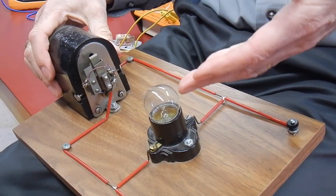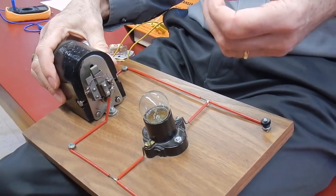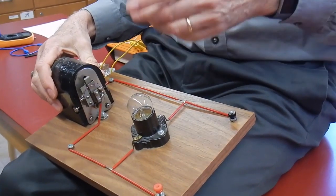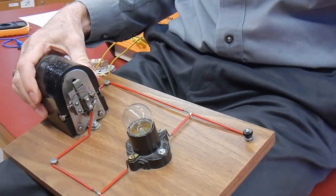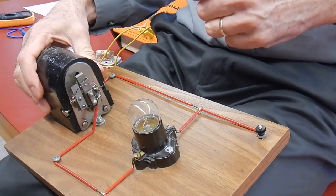Argon is an inert gas - it doesn't combine with the filament, so the filament lasts longer. If you just turn these on and leave them on, they can last 50 years. It's turning them on and off that destroys them eventually.